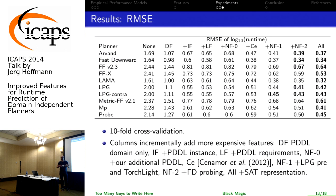To give a specific example: if you add the causal graph features for Fast Downward, prediction performance gets better by a very large margin. Down here, if you add the SAT features, which come in last since it's ordered by increasing cost of computing features, the prediction for NP gets a lot better — which is kind of expected.